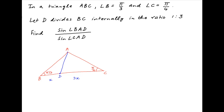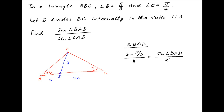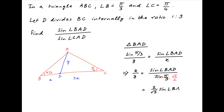Let's assume the length of AD is equal to y. Applying the sine rule in triangle BAD, we have sin(π/3) divided by y is equal to sin(∠BAD) divided by x. Therefore, x/y is equal to sin(∠BAD) divided by sin(π/3). Since sin(π/3) = √3/2, we get x/y = (2/√3) × sin(∠BAD). Let's call this Result 1.